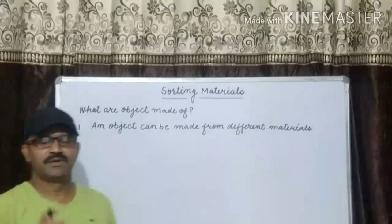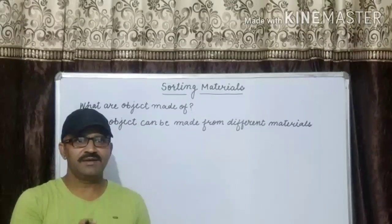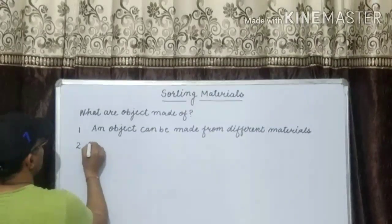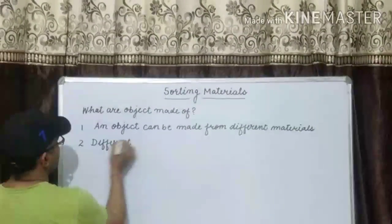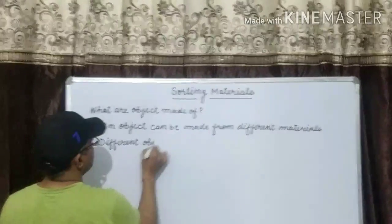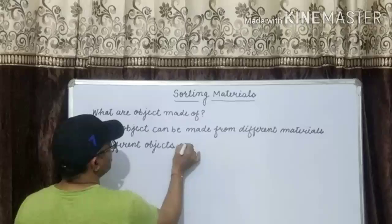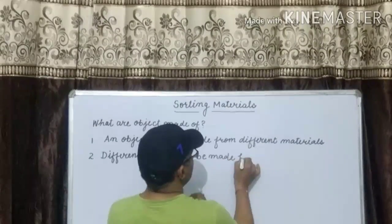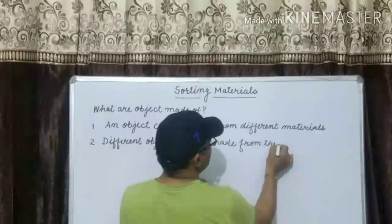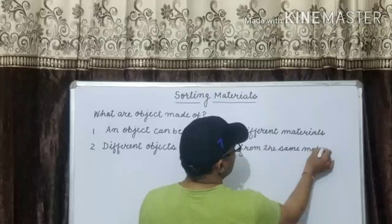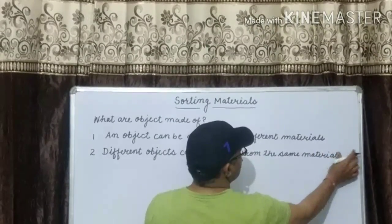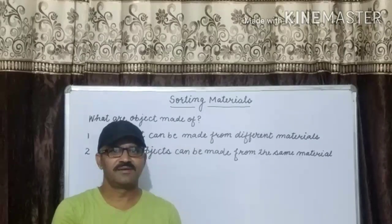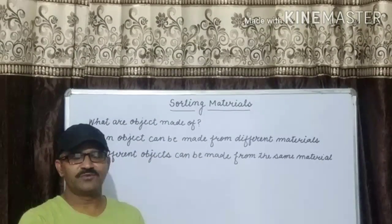For example, shoes can be made from canvas or rubber only. Different objects can be made from the same material. For example, a window pane, mirror, glass, and board are all made up of the same kind of material — that is, glass.